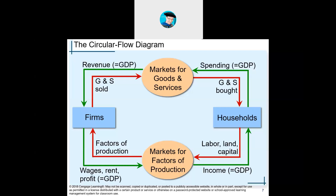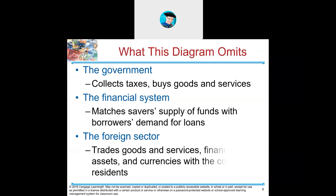Gross domestic product represents the production, flow of goods and services, and the revenue and expenses of both households and companies. All of those things together make gross domestic product. It's cyclical: you live in a house, you work for a company, the company pays you, and you spend that money buying goods and services — that's the circular flow and how the economy works.